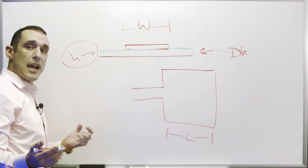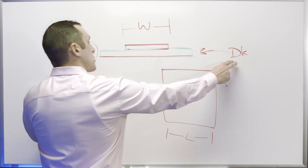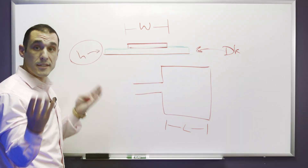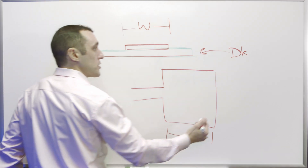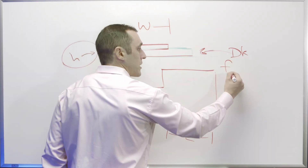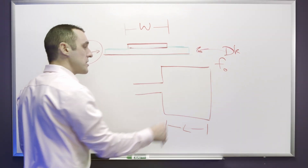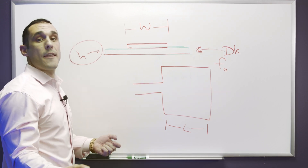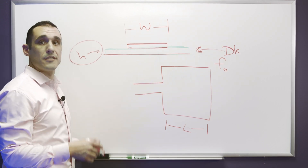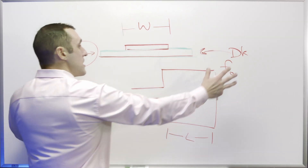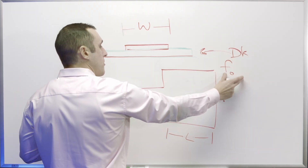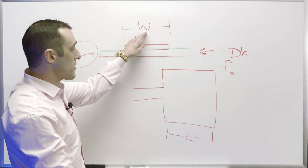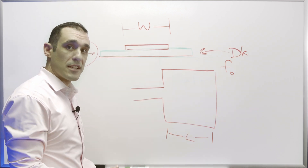Your job as a designer is to determine what the width and length are for your patch antenna given a value for H and a value for DK for your PCB laminate material. These are the two things you get to choose because you get to design the stack-up. Then of course you'll have an operating frequency, F sub zero — the center or carrier frequency you want to broadcast at.